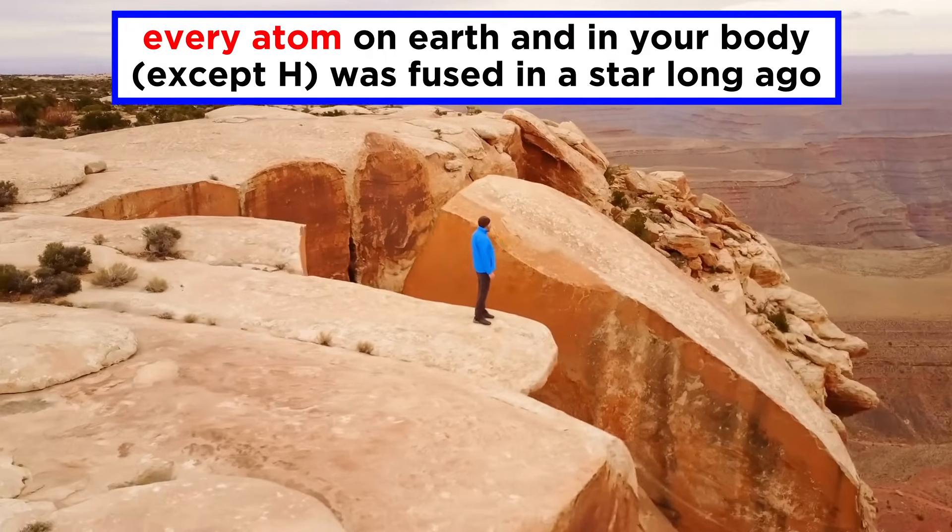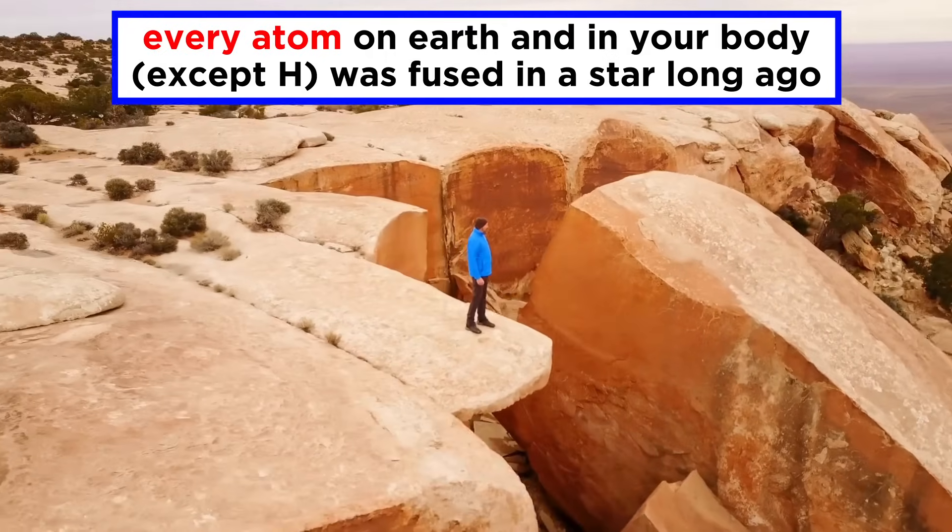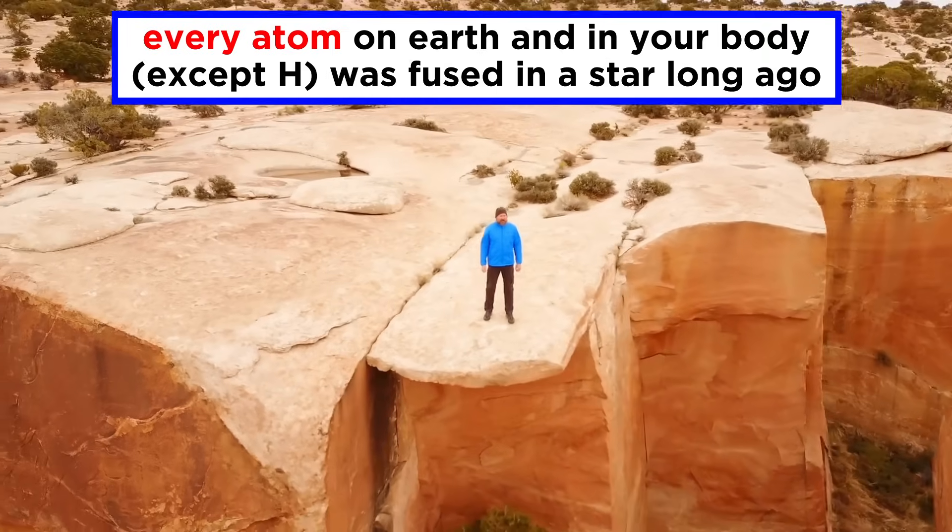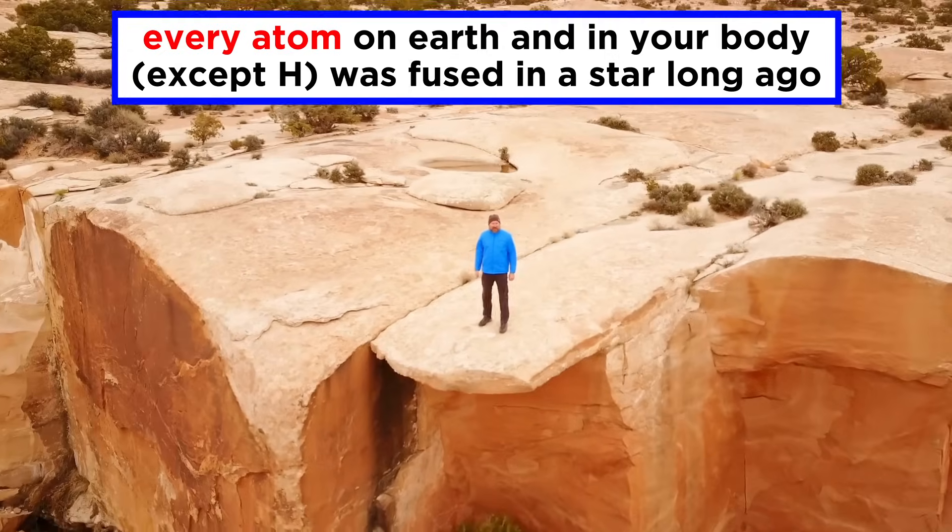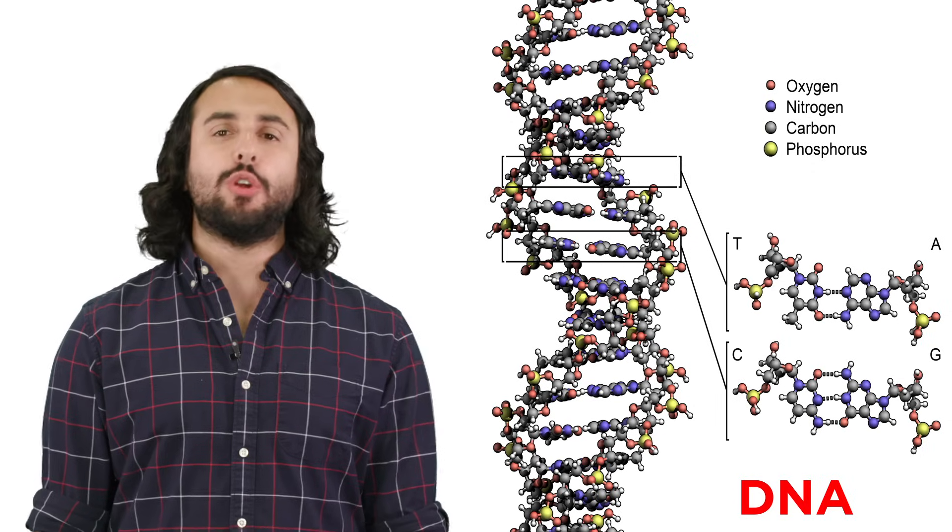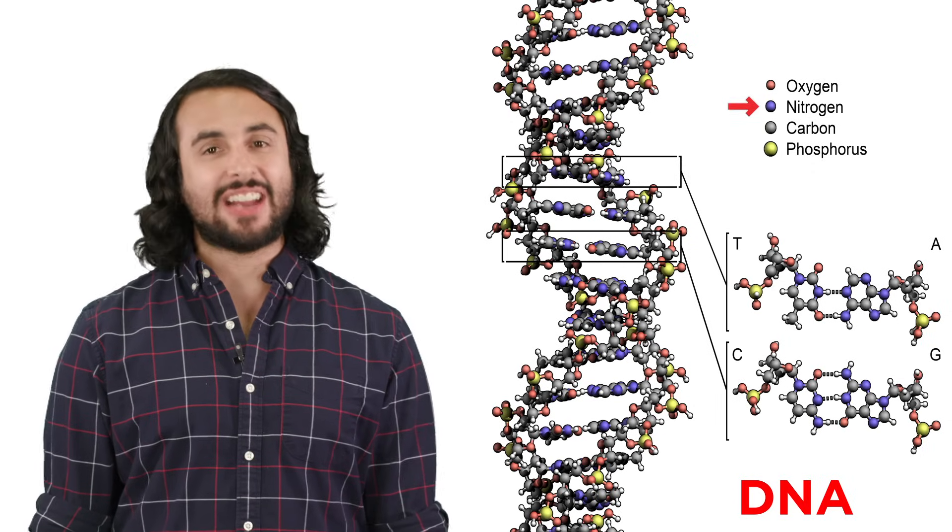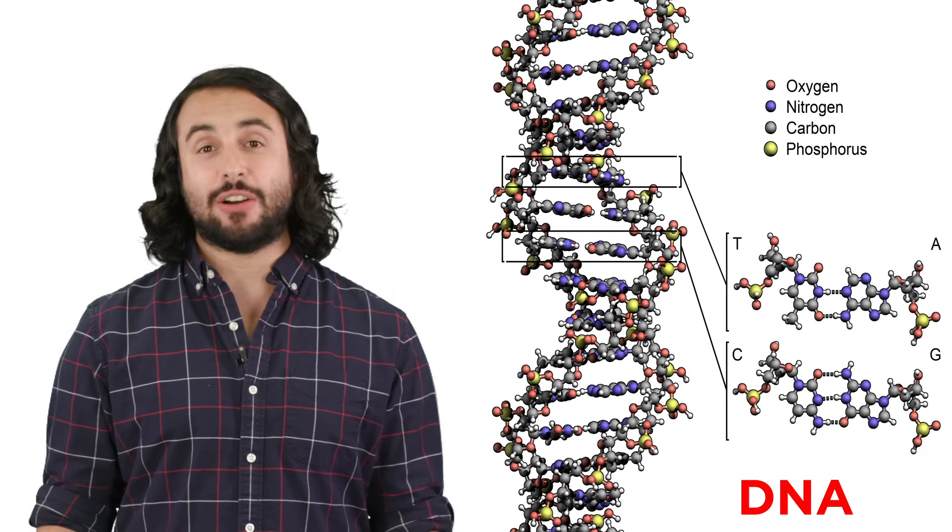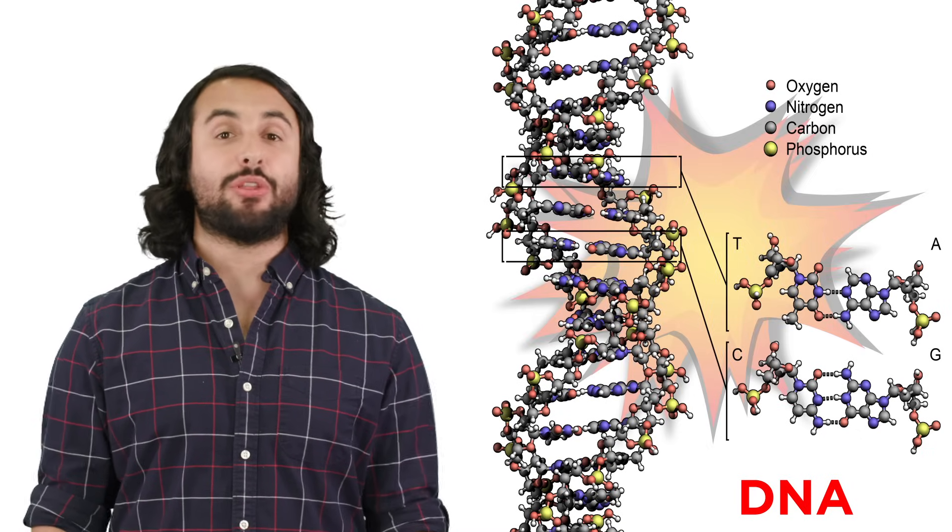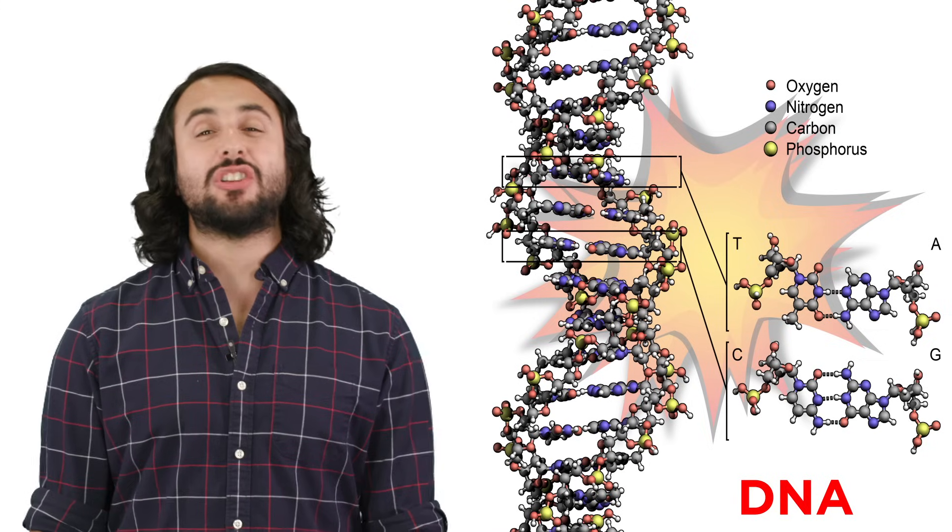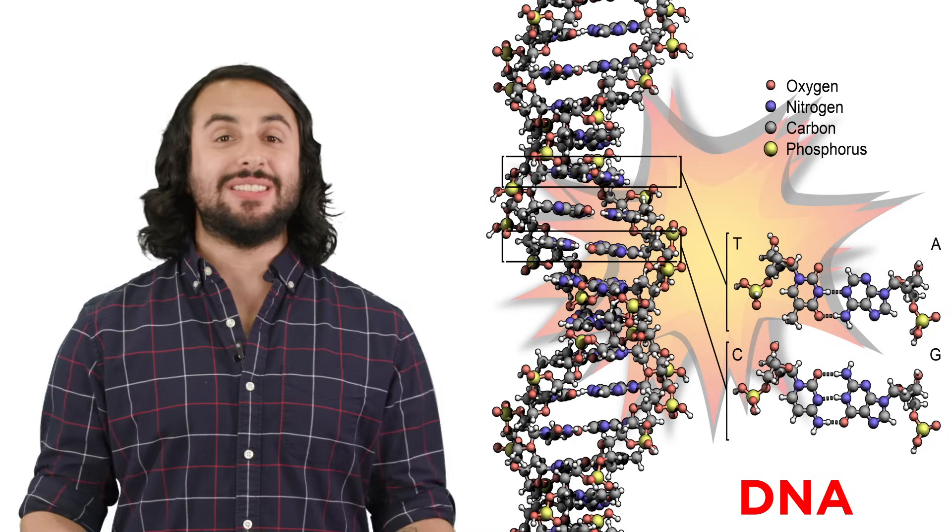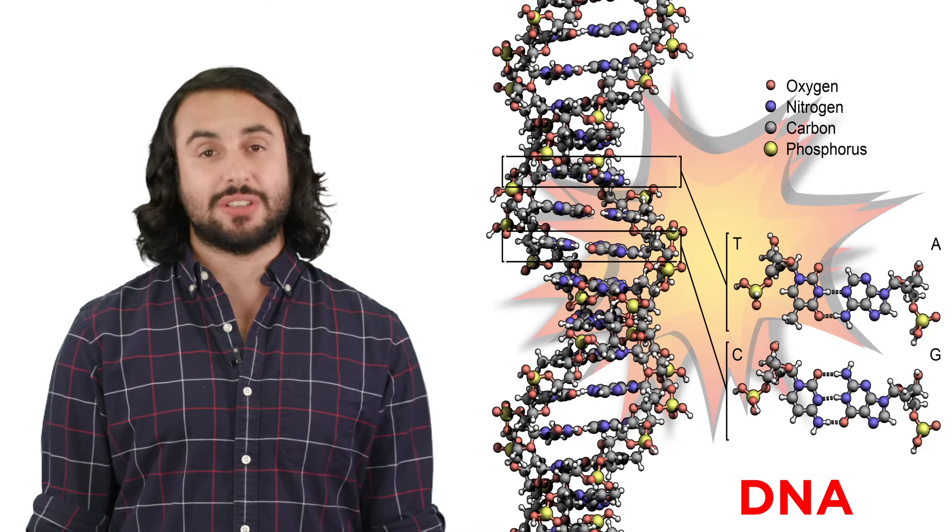We also come to the incredible realization that every single atom on Earth, and therefore every single atom in your body, other than hydrogen, was fused inside a long dead star. All of your carbon, oxygen, nitrogen, phosphorus, and all the trace metals that make you what you are were ejected during the death of one or more stars, which then floated through space until it became part of the disk of matter that originally formed the solar system.